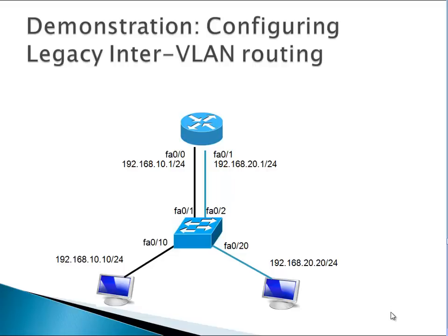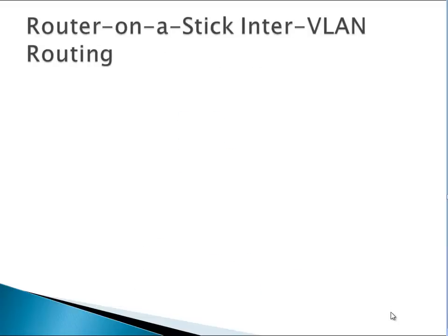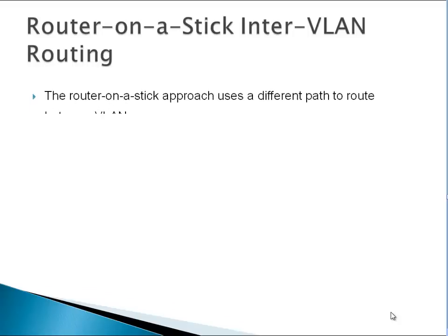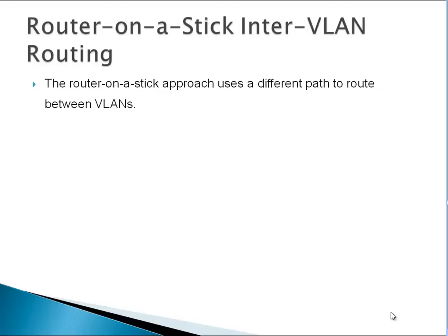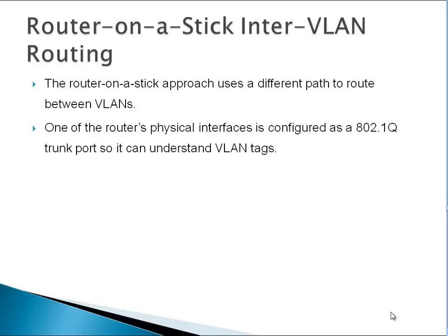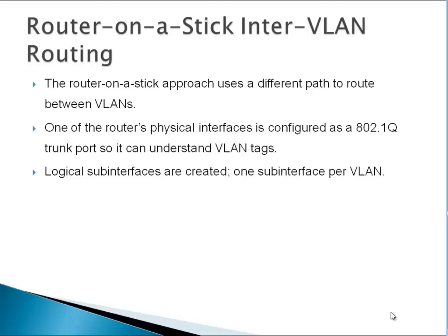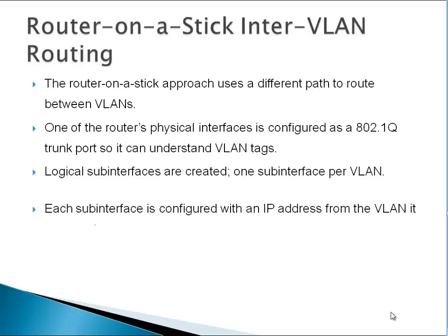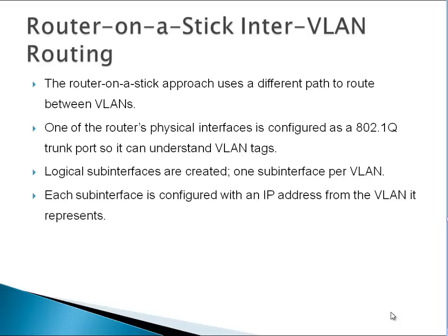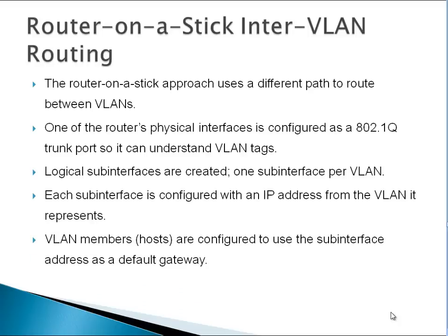We saw legacy inter-VLAN routing. The next one is router-on-a-stick inter-VLAN routing. To communicate between two VLANs they need a router. This method is router-on-a-stick. The router-on-a-stick approach uses a different path to route between VLANs. One of the router's physical interfaces is configured as an 802.1Q trunk port so it can understand VLAN tags. Logical sub-interfaces are created, one sub-interface per VLAN, each configured with an IP address from the VLAN it represents.